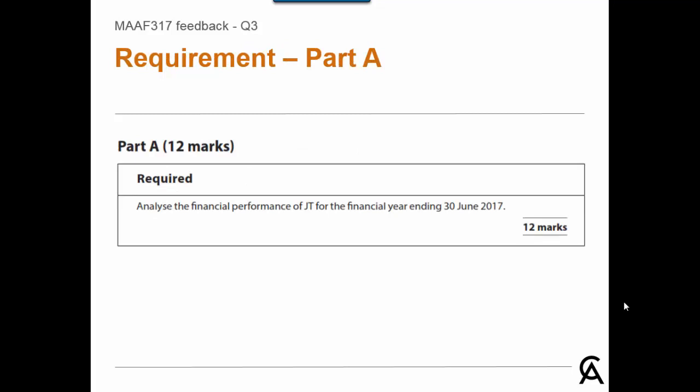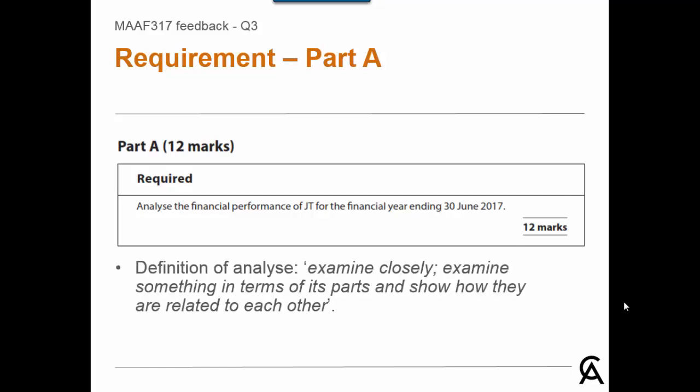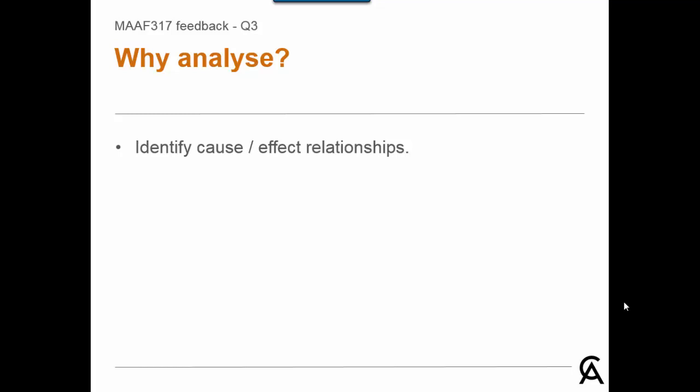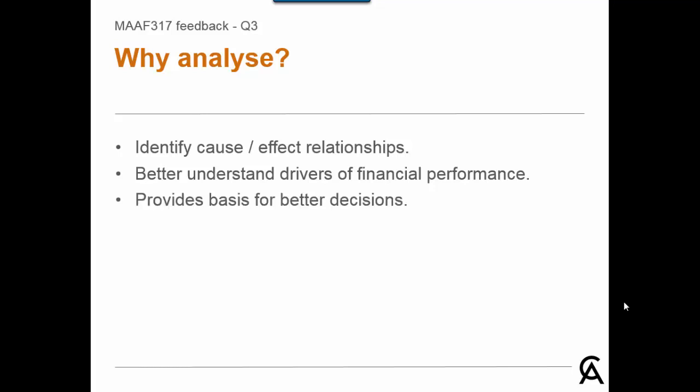Part A of question 3 requires candidates to analyse the financial performance of an organisation. The task 'analyse' is defined as examine closely, examine something in terms of its parts, and show how they are related to each other. This involves identifying linkages between the operations of the organisation, such as those outlined in the background information, and the information in the dashboard. Imagine that a marketing executive asks you to explain the contents of a business's dashboard — you would do so by making linkages or connections between the actual operations of the business and the results reflected in the dashboard. Why do we analyse financial performance? Doing so enables the identification of cause-and-effect relationships, which helps develop an understanding of the underlying drivers of financial performance. Once these are understood, better business decisions can be made, enabling the organisation to achieve its goals more effectively.